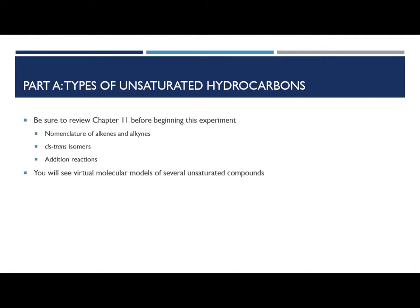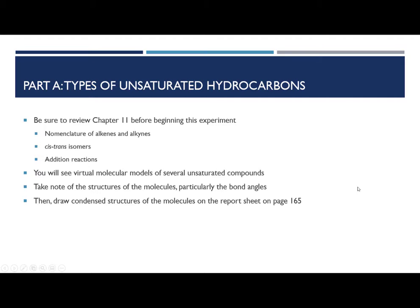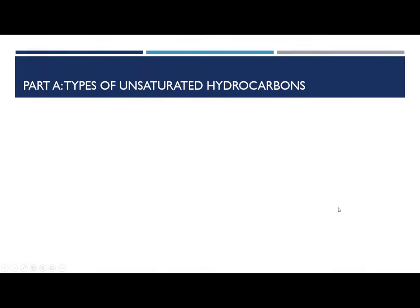So in Part A, I will begin by displaying virtual molecular models of compounds that contain double or triple bonds. Once you've looked at each model, you will want to draw condensed structures of these molecules on the report sheet on page 165. I'd like to change the instructions slightly. For cyclobutene, which is one of the molecules you are asked to draw, I strongly prefer that you draw a skeletal structure rather than a condensed structure. It would be very unusual to draw that molecule as a condensed structure.